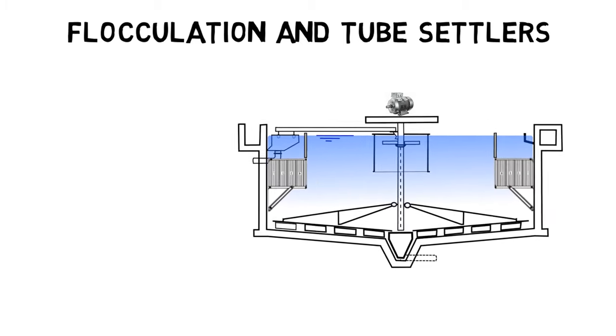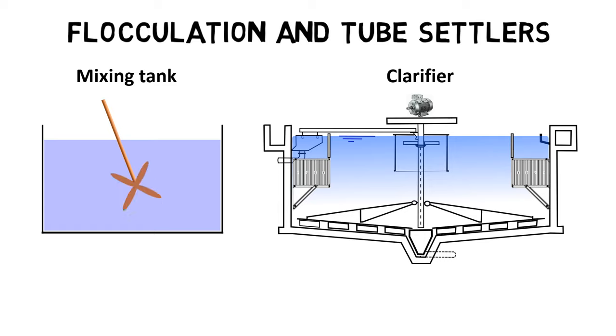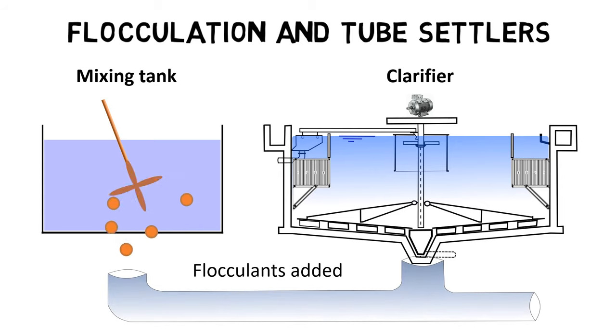In many cases, flocculants or coagulants are applied to the wastewater before it reaches the clarification tank to make the sedimentation process more effective. The chemicals are usually added in mixing tanks with agitators which provide gentle stirring for even distribution of chemicals in the water.